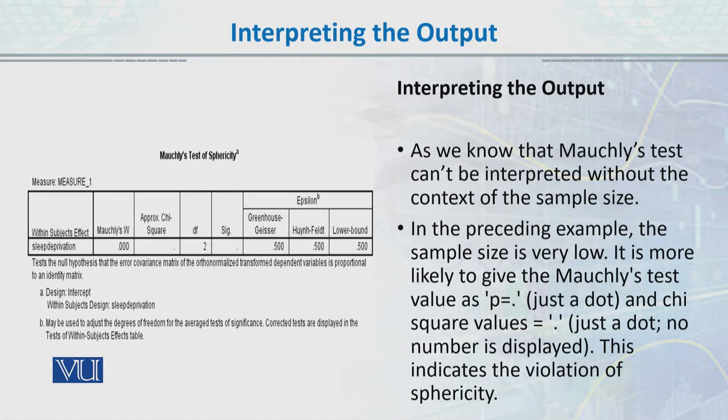The next table is Mauchly's Test of Sphericity. I have told you that when we have independent groups, we use Levene's test for homogeneity of variance. But for repeated measures, we test the homogeneity of variance through Mauchly's Test. We want to see the significant value - we want it to be more than 0.05. But here it has not calculated a value because of the sample size issue.